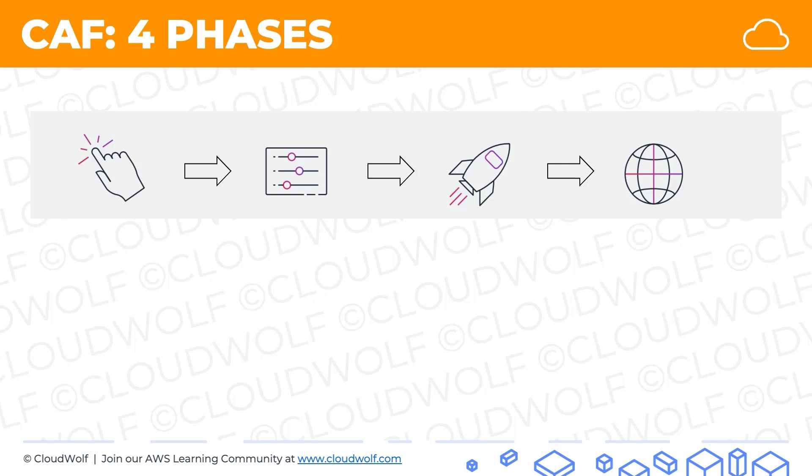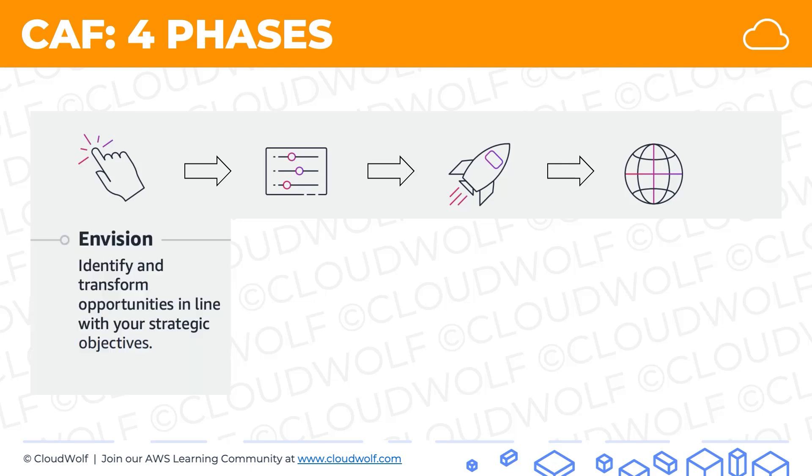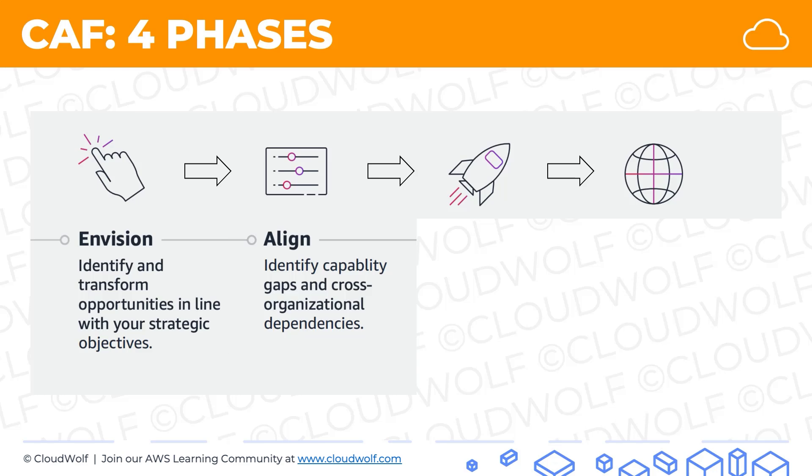Then we have the four phases — this is quite straightforward. It's the sequence in which cloud should be implemented. First, you envision: you identify and prioritize transformation opportunities in line with your strategic objectives.